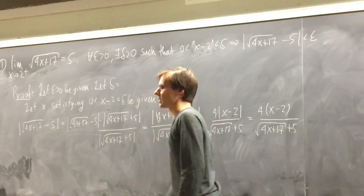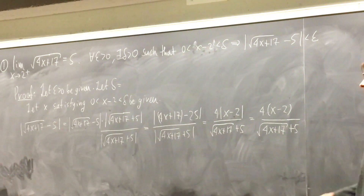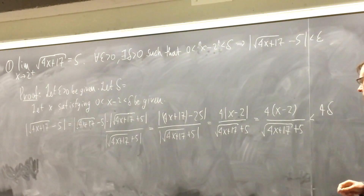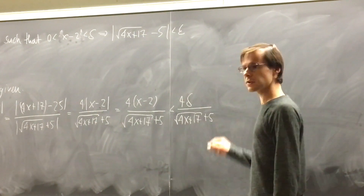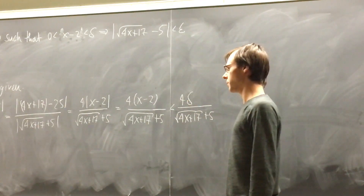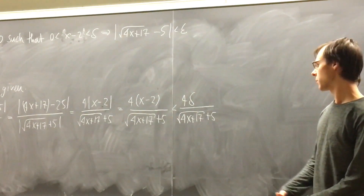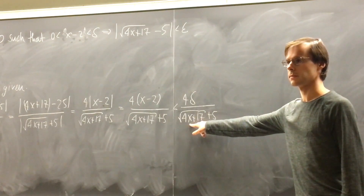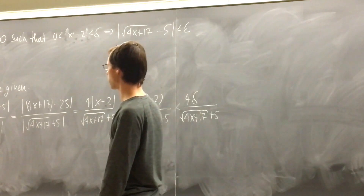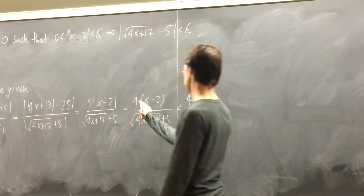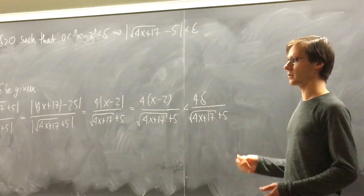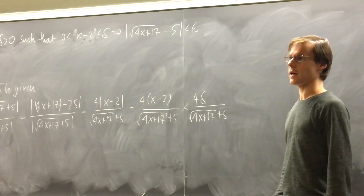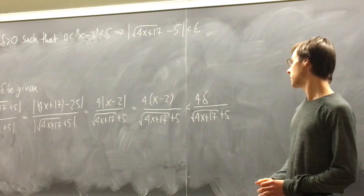We know x minus 2 is greater than 0 and less than delta, so we can drop the absolute values and say this equals 4(x − 2) divided by root(4x + 17) + 5. Since x minus 2 is less than delta, we replace it: this is less than 4·delta divided by root(4x + 17) + 5. Now we have our delta inside the proof, but we haven't replaced all the x's yet.